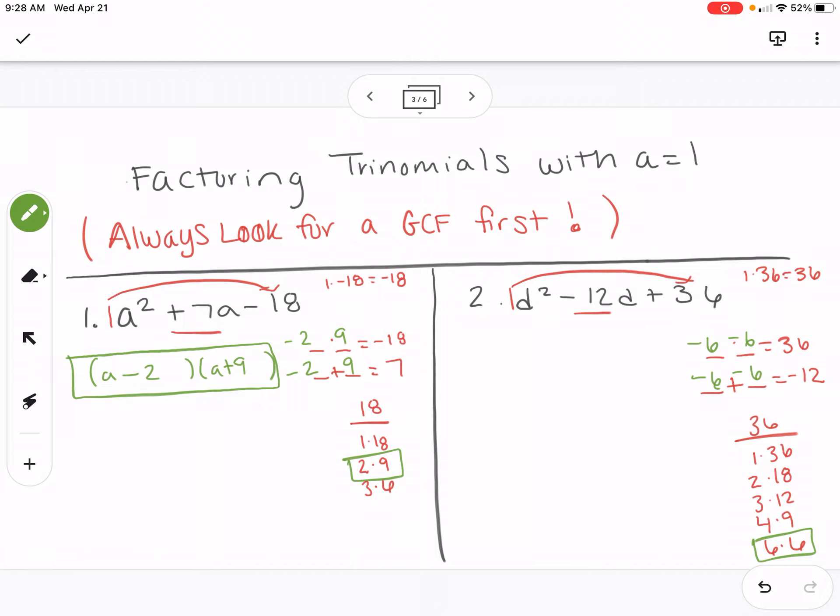Since our expression started with d squared, I'm going to start each factor with d. And then I'm going to put the minus six in each one. And these are my factors.